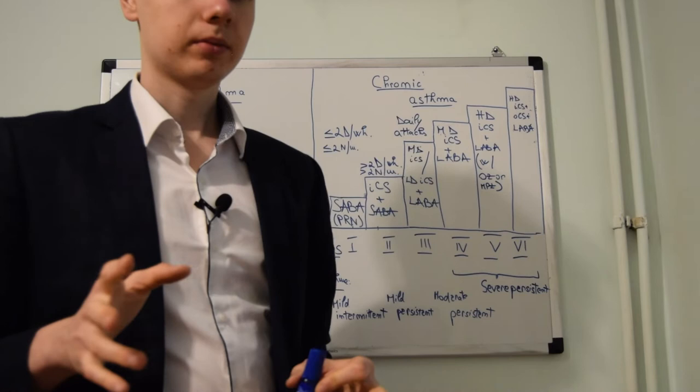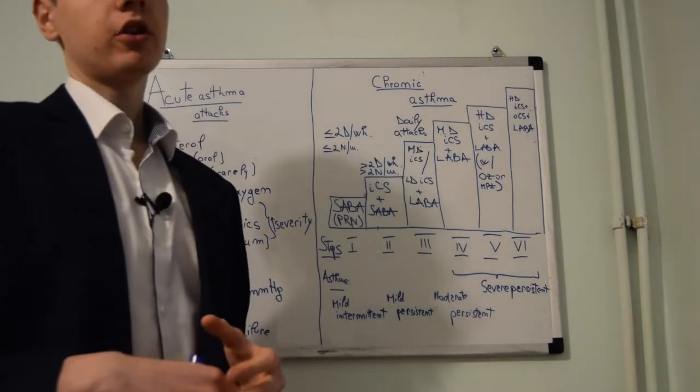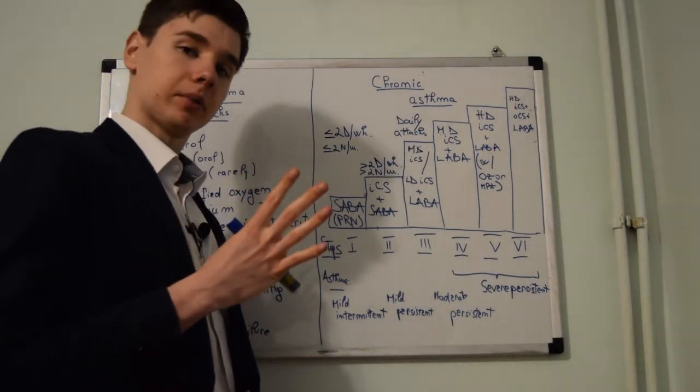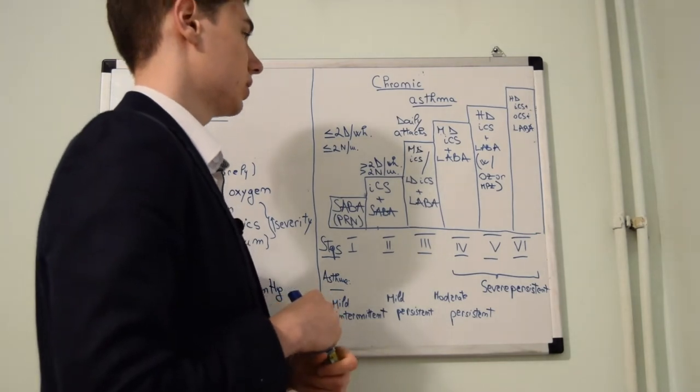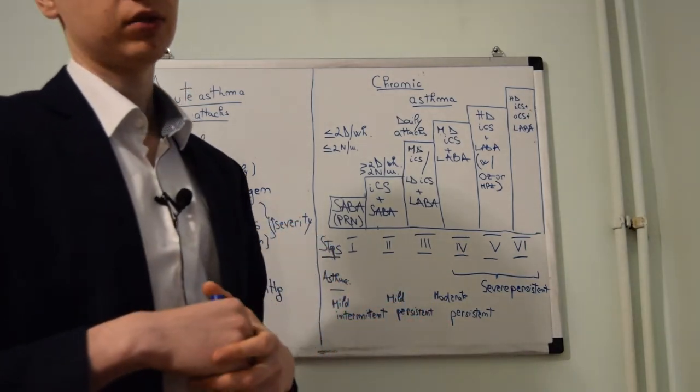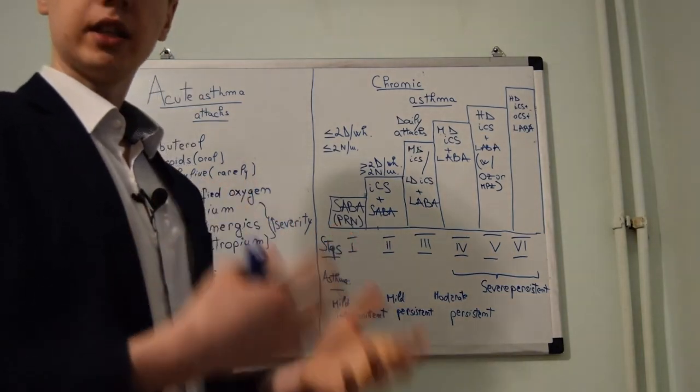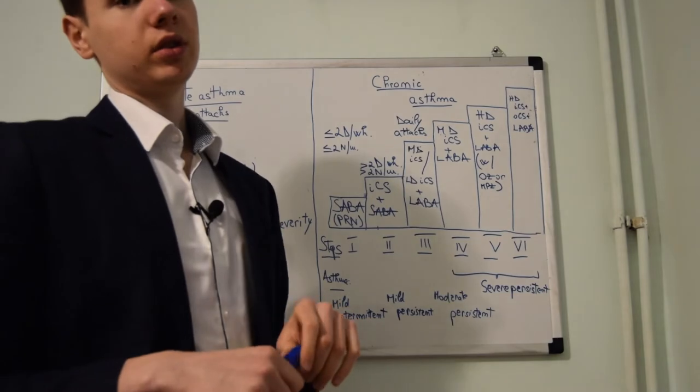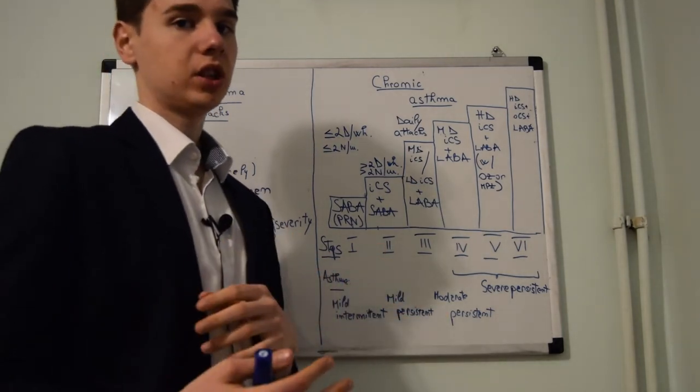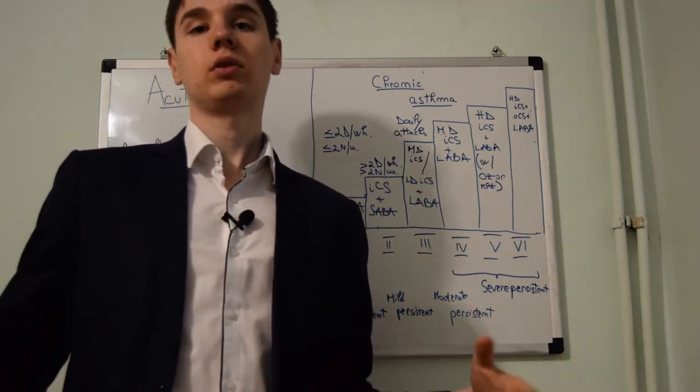The last form of asthma is the severe persistent form. Here are three choices of treatment dependent upon severity. The fourth step is a medium dose inhaled corticosteroids with long-acting beta-2 agonists. If the patient does not have asthma under control we administer a high dose of inhaled corticosteroids alongside long-acting beta-2 agonists. Now we can add omalizumab or mepolizumab if we are dealing with extrinsic asthma.